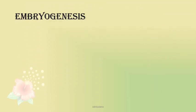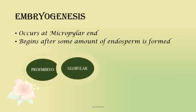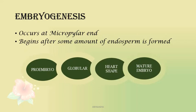We come to embryogenesis, or the development of the embryo. It occurs at the micropylar end and begins after some amount of endosperm is already formed — this ensures that seed formation is not interrupted due to lack of nutrition for the developing embryo. Though the early stages of development are the same in monocots and dicots, differences arise at a later stage. Initially, the embryo in both undergoes a series of stages.